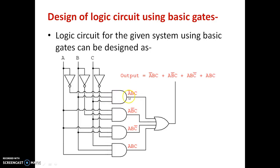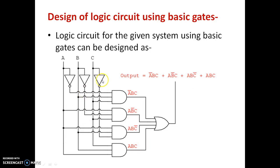Combinedly we can get A complement B C. In the same manner, the rest of the terms — A B complement C, A B C complement, and A B C — can be obtained, and we can OR all four terms together using an OR gate. The output of the OR gate is the boolean expression obtained from the given truth table. This is how we design a logic circuit using simple basic gates for a given boolean expression.